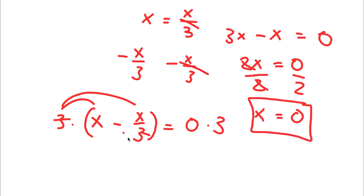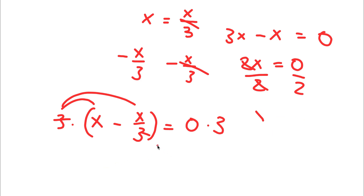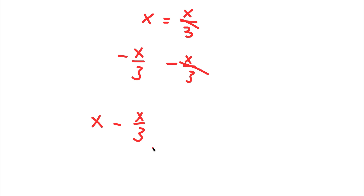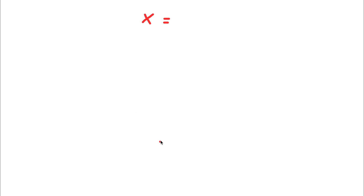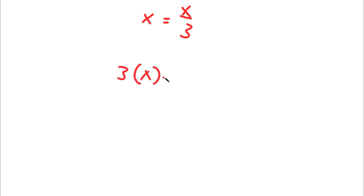So now to check — actually, let me first show you a different method of solving this. Before, we subtracted x over 3 on both sides. This time, instead, I'm simply going to start by multiplying both sides by 3.